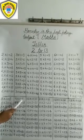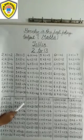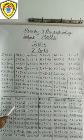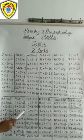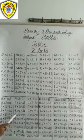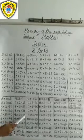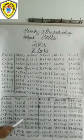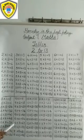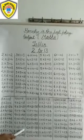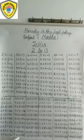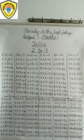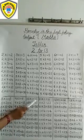9 1s are 9. 9 2s are 18. 9 3s are 27. 9 4s are 36. 9 5s are 45. 9 6s are 54. 9 7s are 63. 9 8s are 72. 9 9s are 81. 9 10s are 90.